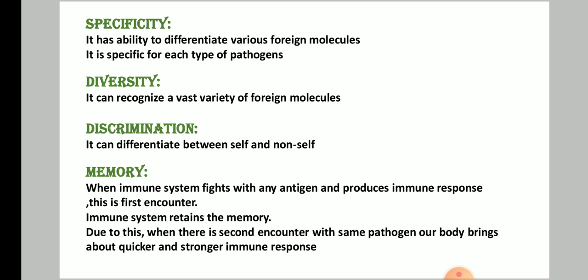The fourth and last feature is memory. When you fall ill, your body starts responding to the antigen — an immune response is produced and immunity develops. This is called the first encounter. Due to this first encounter, your immune system memorizes the type of antigen and the antibody that gave you relief. So during a second encounter with the same pathogen, your body brings about a quicker and stronger immune response.